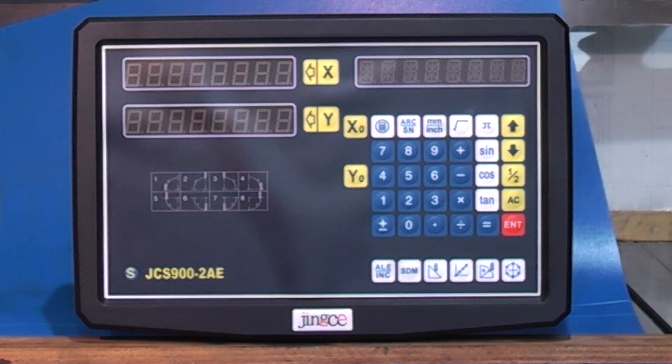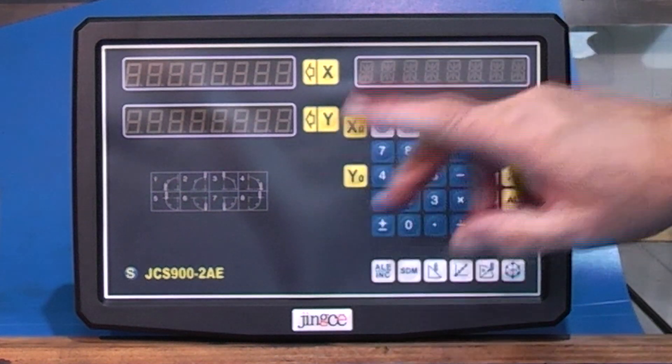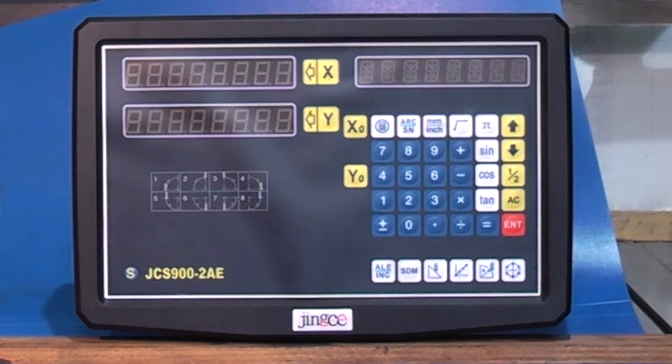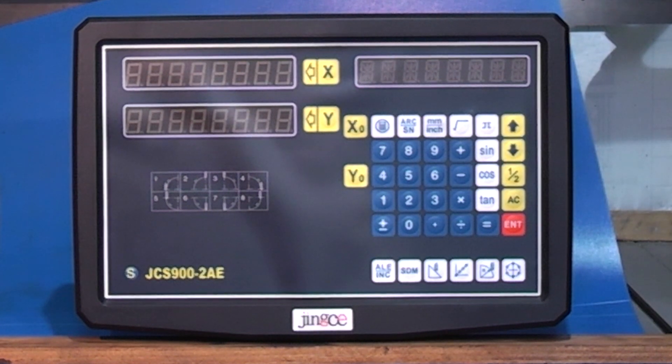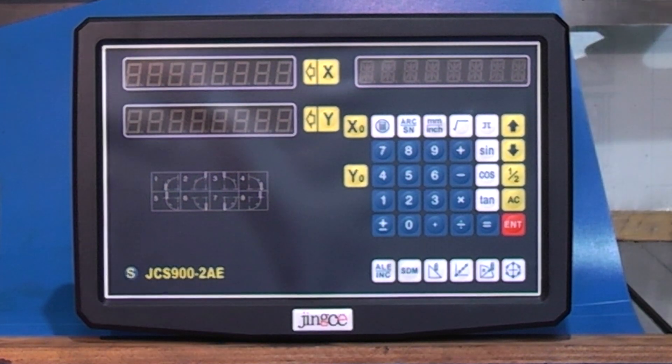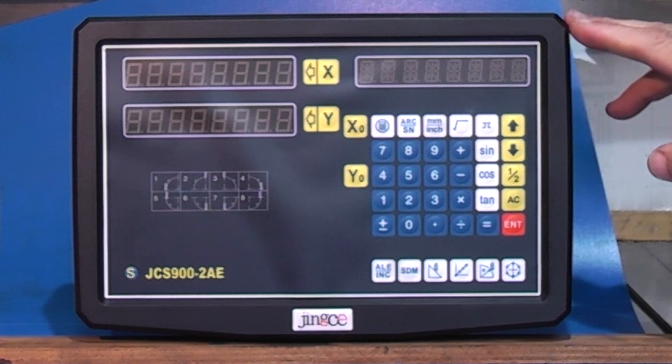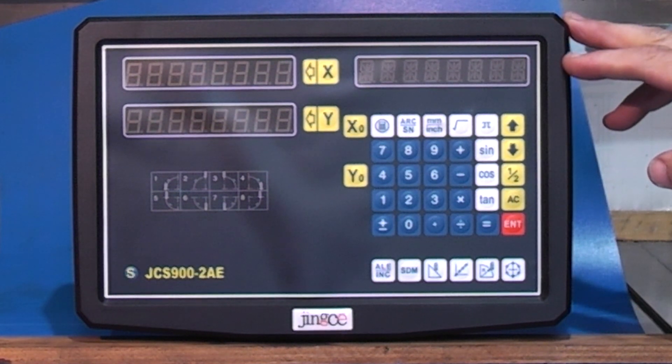This one's two axis, X and Y. You can get them with the third axis which is there. Knowing what I know now, I would buy the readout with the three axis because it's only a few pounds more and you could use it on your milling machine or the lathe. The internal programming is the same.